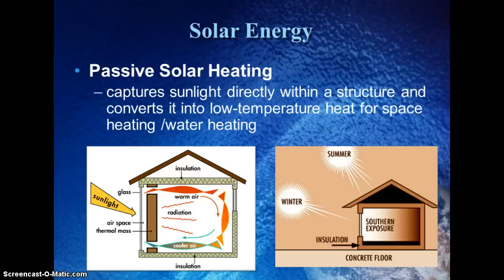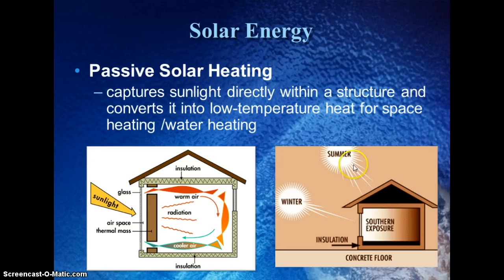Passive solar uses sunlight coming directly through the window. You might have a concrete floor or dark tiles that absorb the heat. Usually in the northern hemisphere, you would have south-facing windows so that in the winter, when the angle of sunlight is lower, it enters your windows, whereas in the summertime the angle is higher, hits your roof, and is shaded.